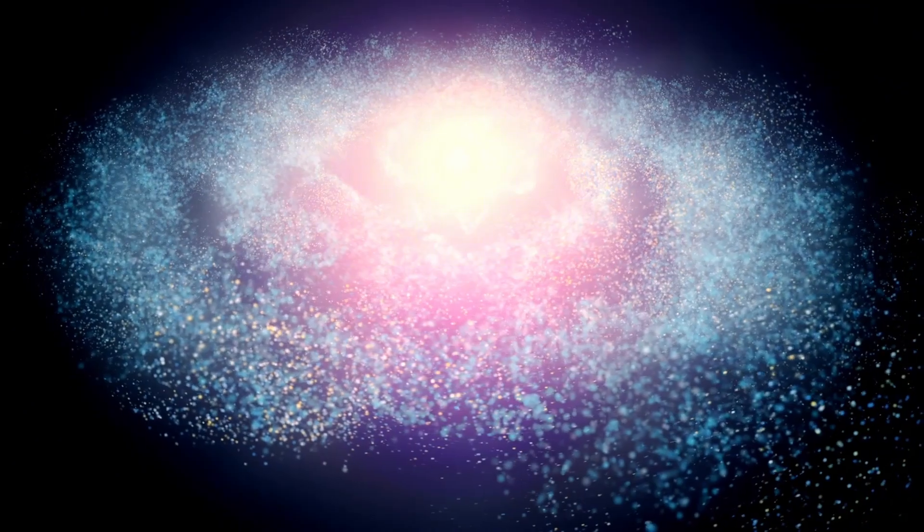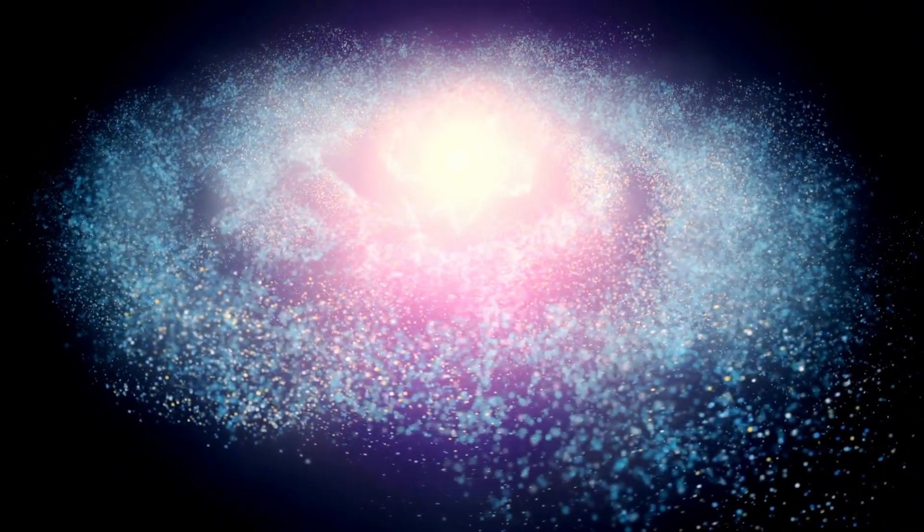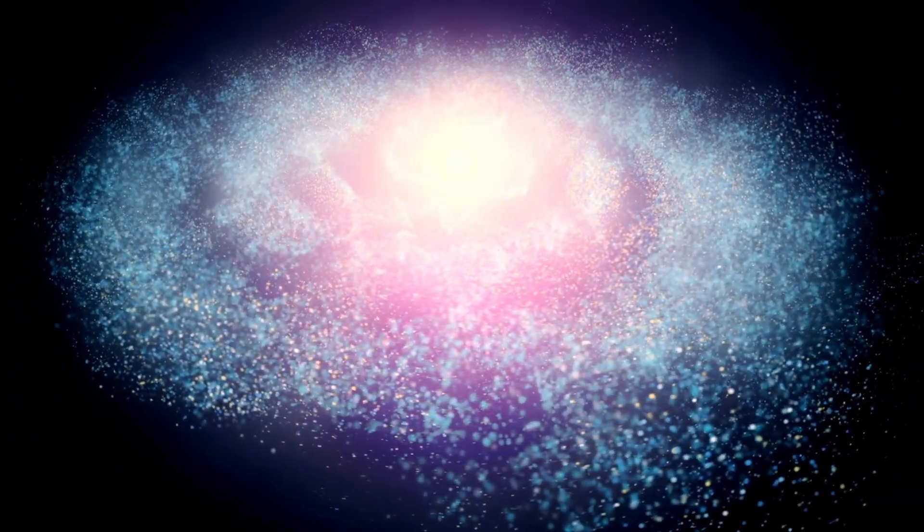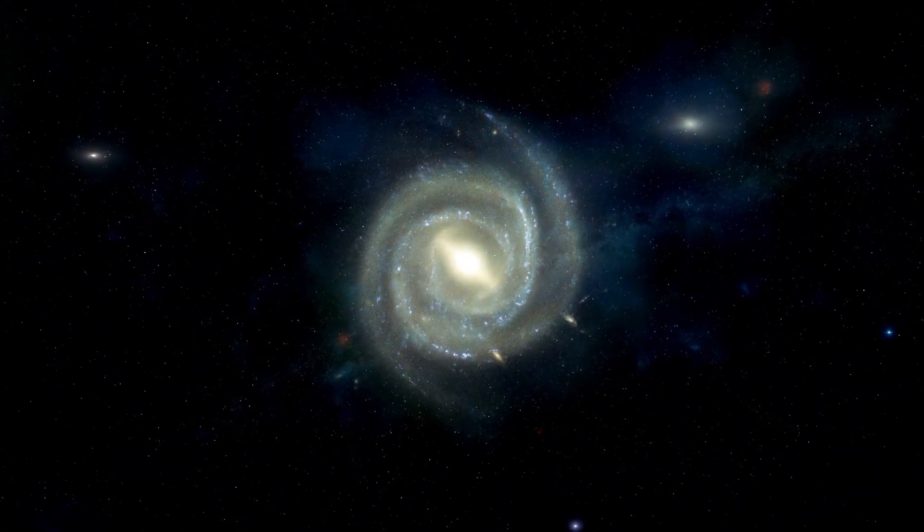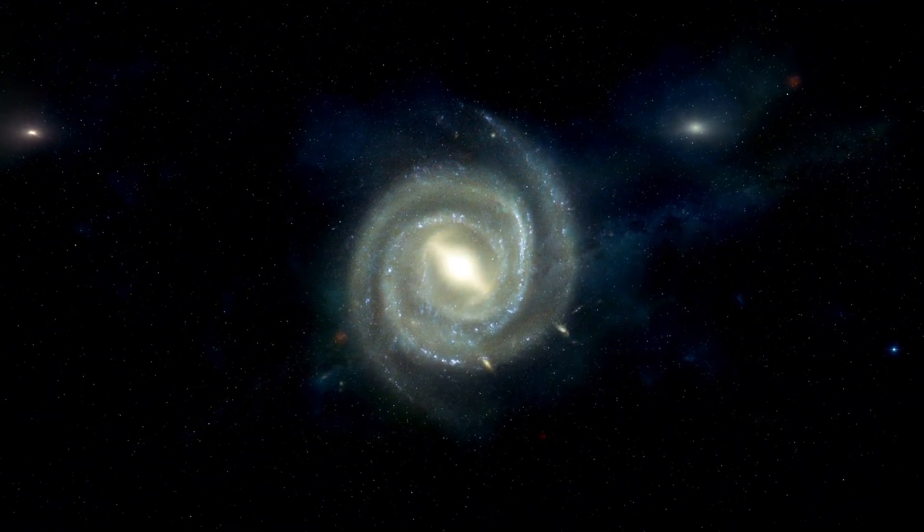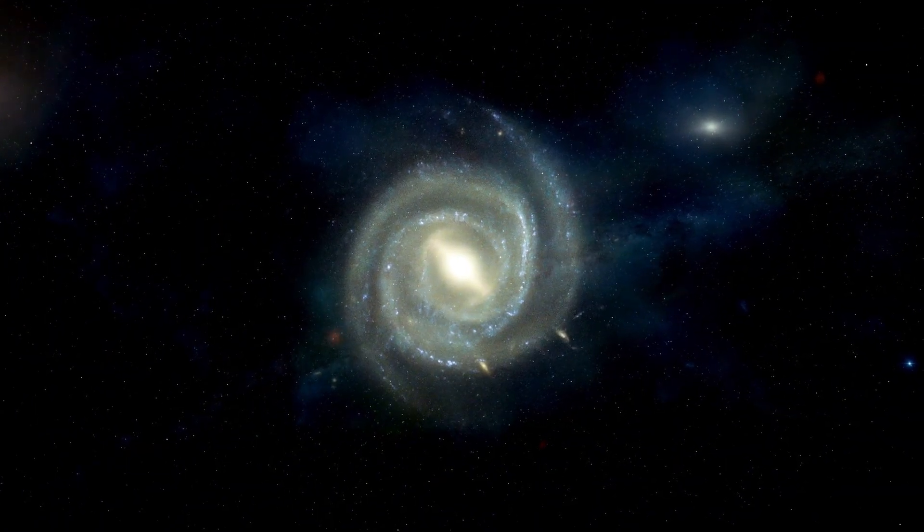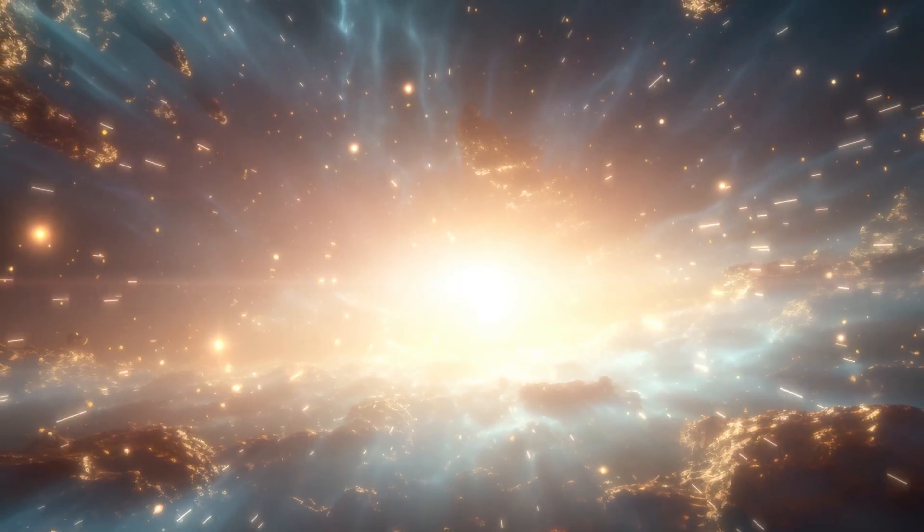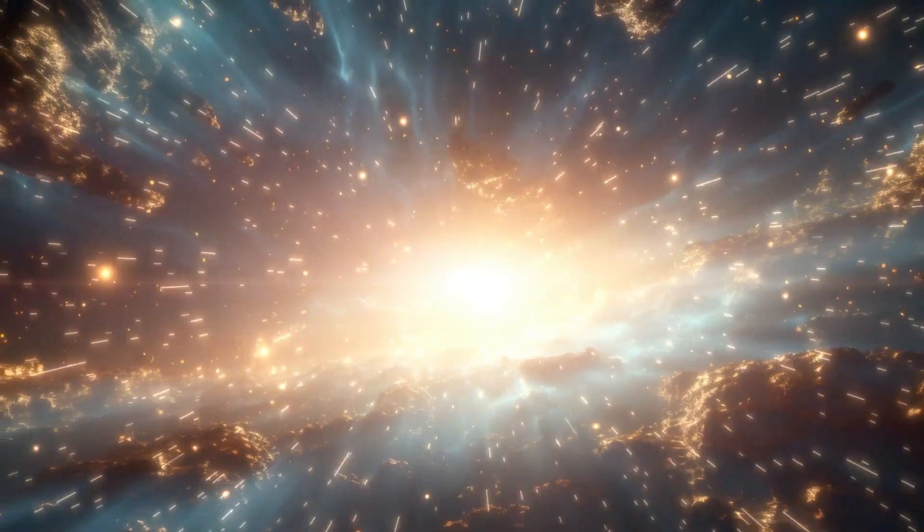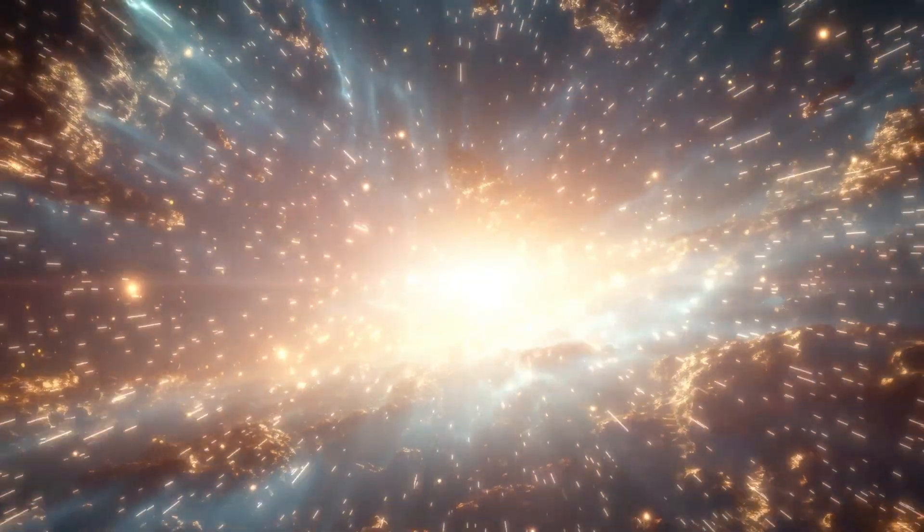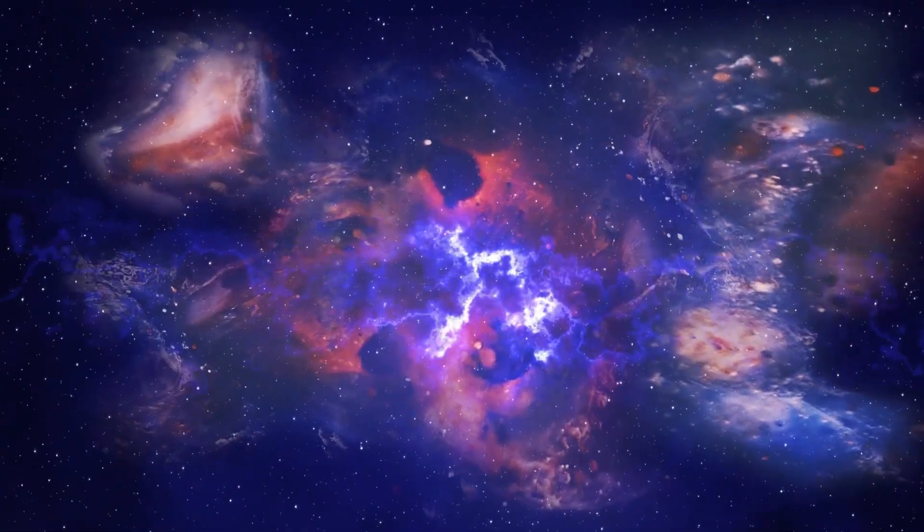When you look at stars in thick, dusty parts of space, you can learn more about them. This is because Webb's special infrared technology can see planets around stars other than our Sun. Finding and learning more about these exoplanets is very hard. They are so small and faint compared to the light from the stars they orbit that they can be hard to see. But Webb's advanced techniques let scientists study these exoplanets.